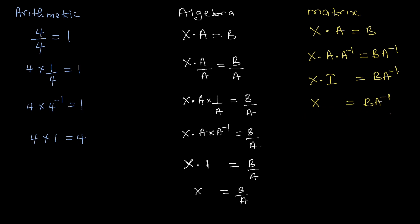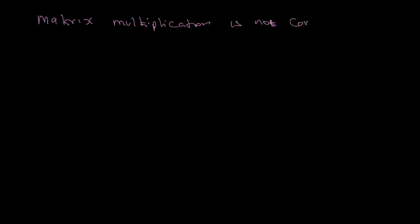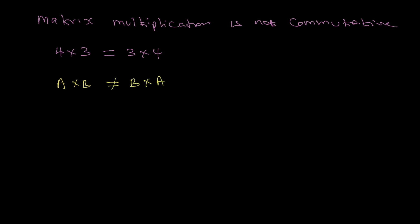This shows why we need the inverse matrix — we multiply by it to find x. One important thing to remember: a times the inverse of a equals I, and the inverse of a times a also equals I. In matrix multiplication is not commutative — a times b is not equal to b times a — unlike numbers where four times three equals three times four.